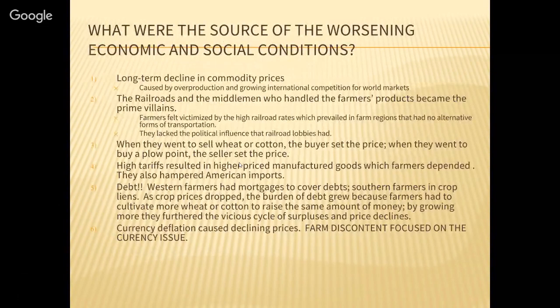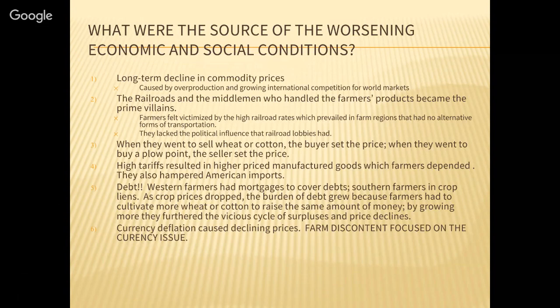What were the economic and social conditions like on the farm? Number one — and this is big — leading to the Panic of 1893, especially on the farm, we see a long-term decline in commodity prices. When you overproduce, it causes the value of what you're producing to fall, so you can't make profits. Another cause in the decline of commodity prices would be growing international competition — not only competing against fellow Americans, but also competing in foreign markets.